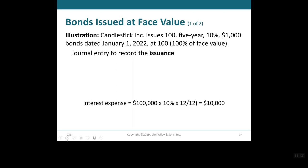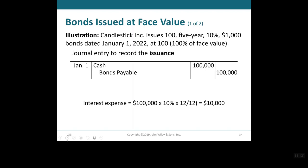In this example, Candlestick Inc. issues 100, five-year, 10%, $1,000 bonds dated January 1, 2022 at 100, meaning 100% of face value. To record this issuance, we debit cash for $100,000 and credit bonds payable for $100,000. For interest expense, we use principal times rate times time: $100,000 times 10% times 12/12, which gives us one year, so interest expense is $10,000.